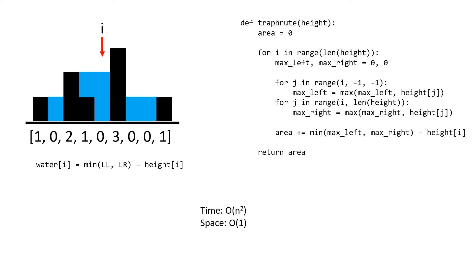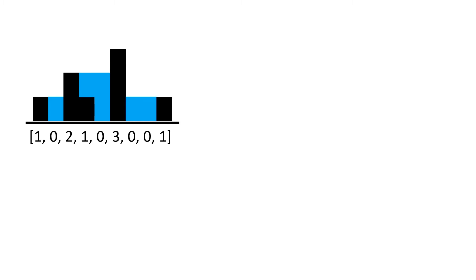Now that we have a working solution, let's try to optimize for time and space. The costly step in our brute force solution is that for each bar we must loop through the array to find the left and right boundaries, requiring n steps. To speed this up we need a way of looking up the left and right boundaries in constant time. The way to do this is to pre-compute these boundary values and store them for any given index in an array.